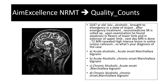Marchiafava-Bignami disease is a demyelination of the corpus callosum. In such cases, earlier the condition was found only on post-mortem examination, but now with the advent of radiology and improvements in clinical neuromedicine, such cases are identified in living patients. There are practically two types: Type A and Type B.